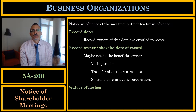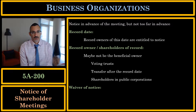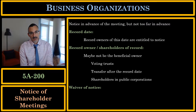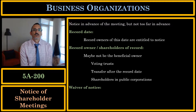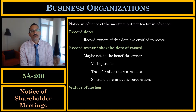Second, transfer after a record date. Imagine the record date is March 1st and you are the shareholder of record as of March 1st. The shareholders meeting is on April 1st. Sometime between March 1st and April 1st you transfer your shares to me. Now you are the shareholder of record, but I am the beneficial owner. Who gets notice? You do — even though you are no longer the shareholder. Who gets to vote? You do, because you are the shareholder of record as of the record date.